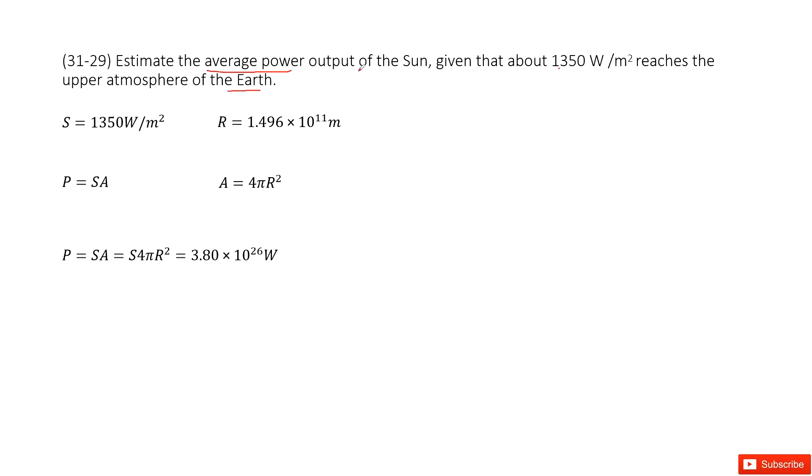So now you can see, given you the Poynting vector, you need to find the power. As we know, the Poynting vector is the power divided by the area, right? So now you can get the power should equal to the Poynting vector times A. A is the area.